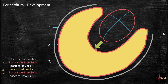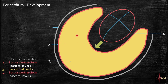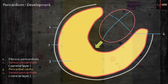The visceral layer becomes the epicardium of the heart. The parietal layer is composed of fibrous pericardium on top with underlying serous pericardium. In between the serous pericardium, the pericardial cavity is present, and this cavity contains the fluid. Let's see a schematic representation of pericardium histology.